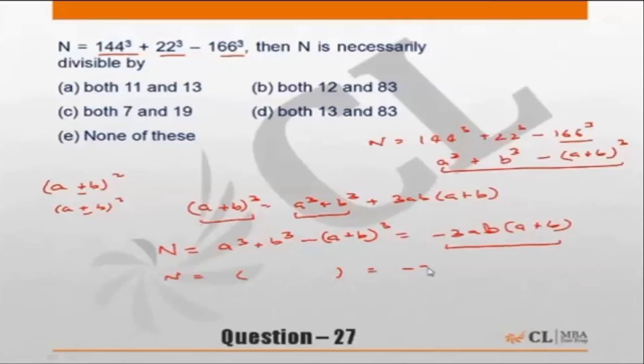Minus 3, what is a? What is b? a is 144 and b is 22. So minus 3 into 144 into 22 into a plus b is 144 plus 22, so 166.